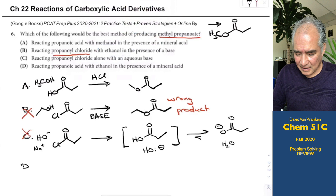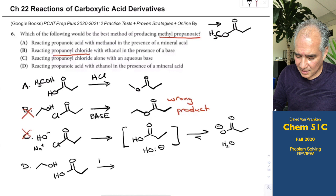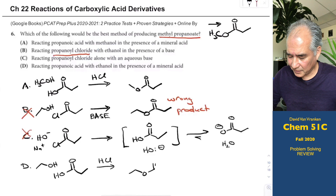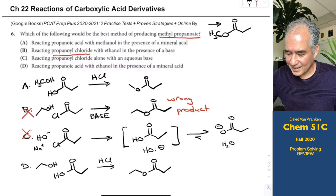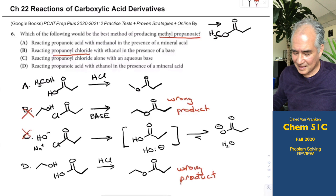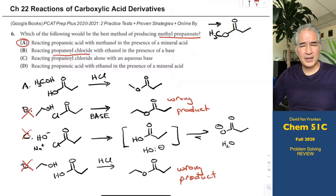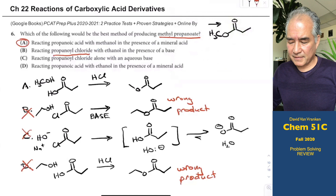Choice D: reacting propanoic acid with ethanol in the presence of a mineral acid. That's called Fischer esterification and gives ethyl propanoate, but that's the wrong product again. So the answer to this question is A. What's tricky is you have to know carbonyl chemistry and functional group transformations from carboxylic acid derivatives — Chapter 22 in the Clayden/Clayden-Smith textbook — plus how to name simple esters, carboxylic acid derivatives, and acyl chloride derivatives.